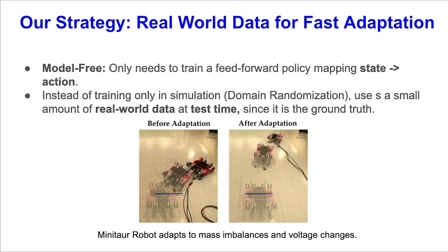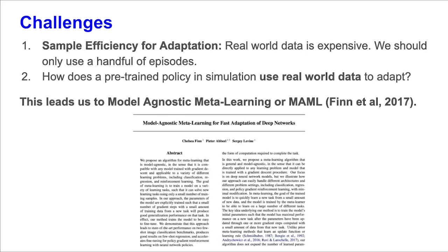The goal of our work is to quickly adapt the robot's behavior to a different environment than the one that the robot is trained for. We use a model-free approach which only needs to train a feedforward policy mapping states to actions, and our approach also uses real-world data at test time for more accurate adaptation. Some of the challenges of this approach consist of sample efficiency of adaptation, as real-world data is expensive. We should only use a handful of episodes of real-world data at most. Number two, the question arises of how to actually reuse the real-world data to adapt a pre-trained policy.